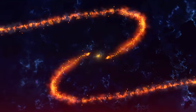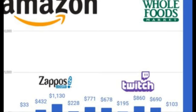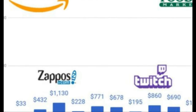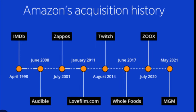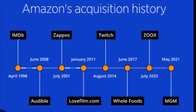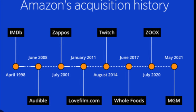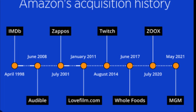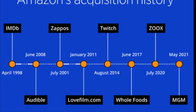7. Acquisitions — Zappos, Audible, 2009 and beyond: Amazon made several key acquisitions, including Zappos, Audible, and Whole Foods, expanding its reach into various industries.